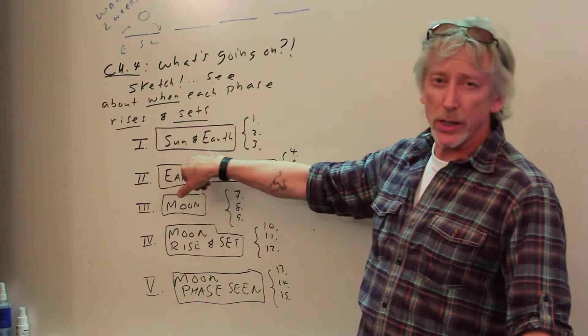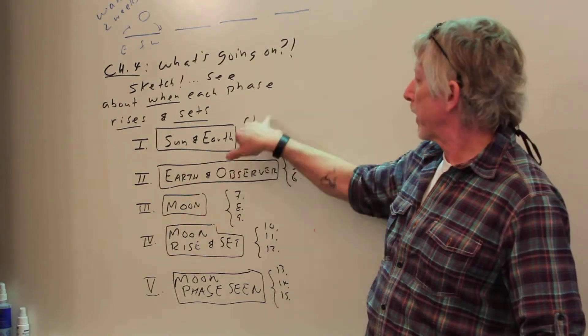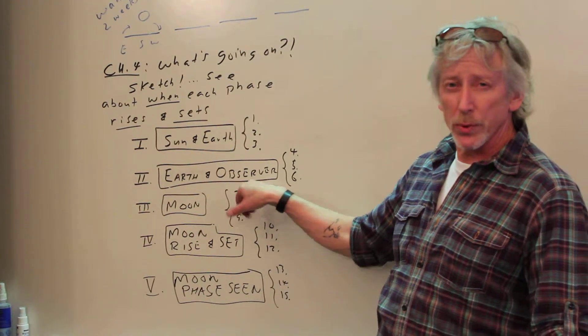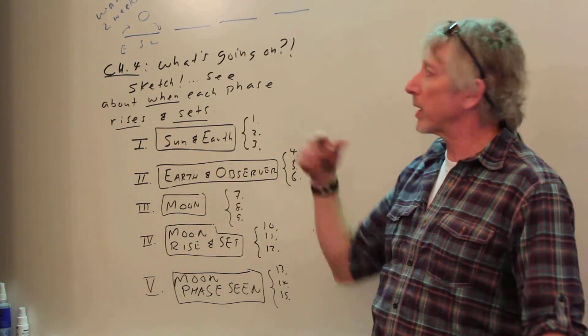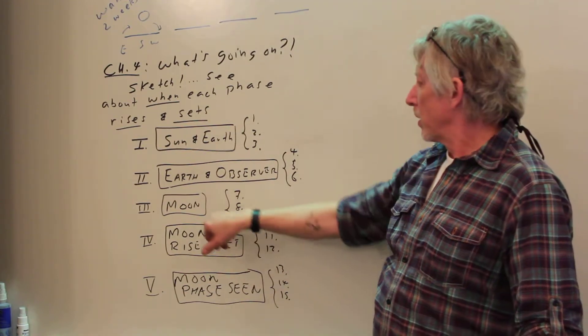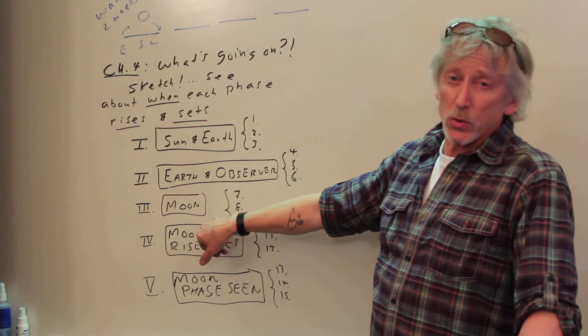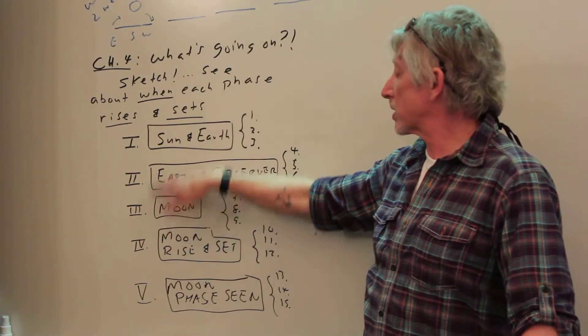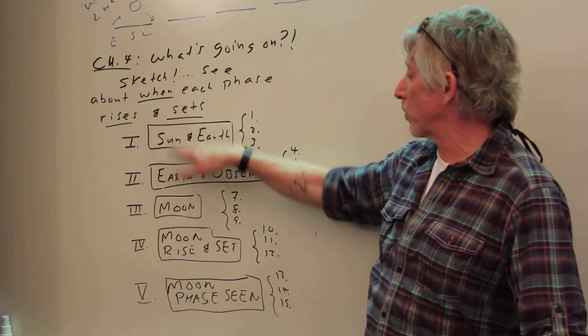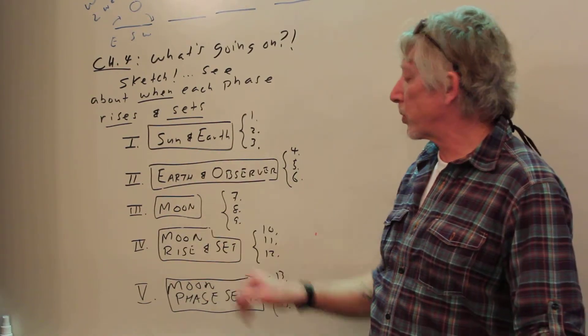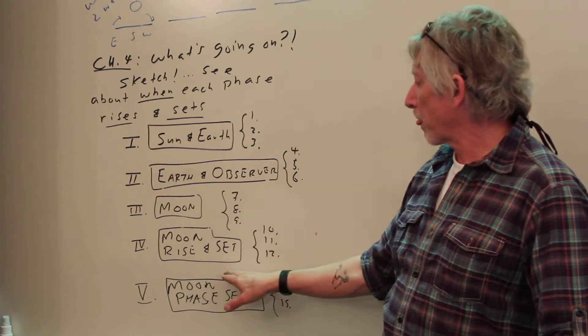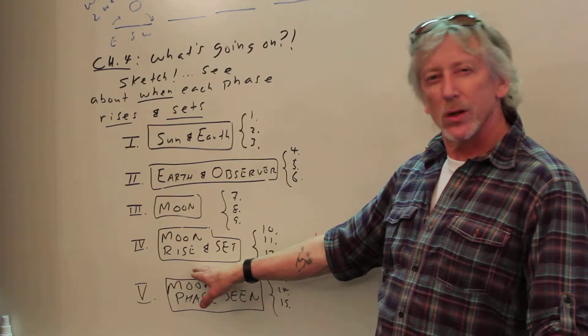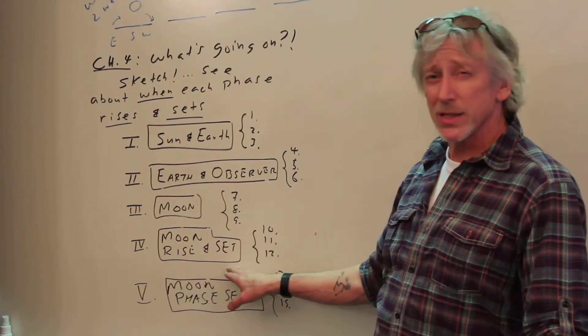So the first step is drawing the sun and earth. We'll take some steps, at least the first part. The second part we'll put on earth, we'll put an observer spinning around. What do they see as they're looking up? Third part, we've got to put in our moon. Where is it? Put those in. Then from these, once we've set up our picture, which is the same no matter what the moon phase, we're all going to do 1, 2, 3 the same. Then we're going to put in moon at different places, one at a time.